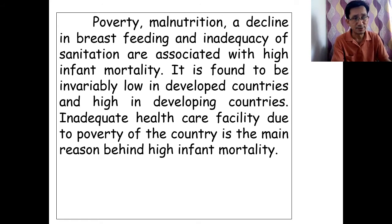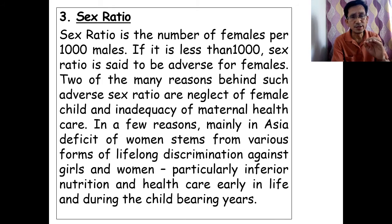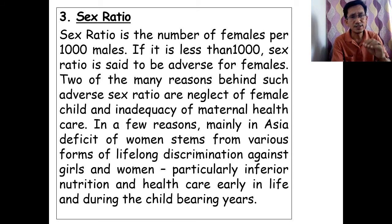This is the second indicator of development. The third indicator of development is the sex ratio. Sex ratio is the number of females per 1,000 males. If it is less than 1,000, the sex ratio is said to be adverse for females.